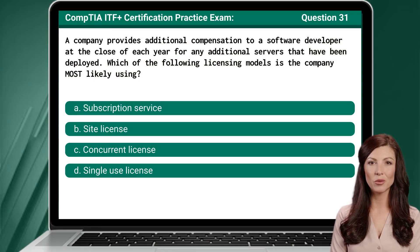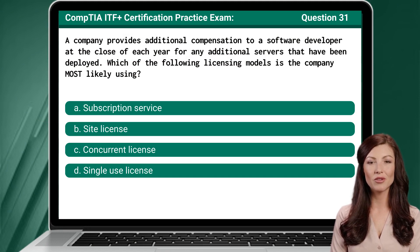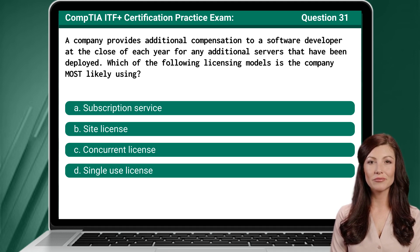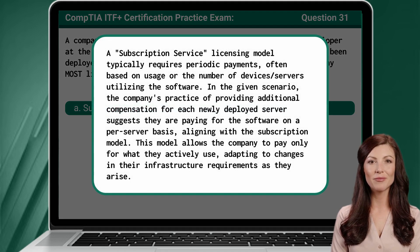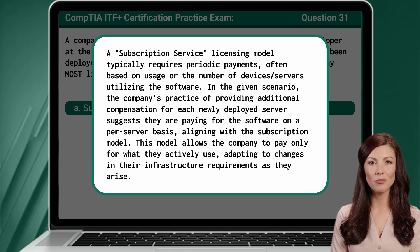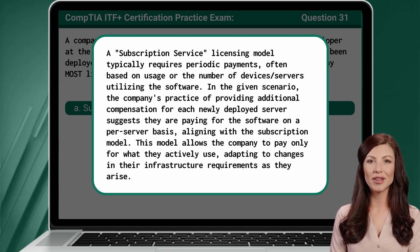Question 31. A company provides additional compensation to a software developer at the close of each year for any additional servers that have been deployed. Which of the following licensing models is the company most likely using? The answer is A: Subscription service. A subscription service licensing model typically requires periodic payments, often based on usage or the number of devices or servers utilizing the software. In the given scenario, the company's practice of providing additional compensation for each newly deployed server suggests they are paying for the software on a per-server basis, aligning with the subscription model. This model allows the company to pay only for what they actively use, adapting to changes in their infrastructure requirements as they arise.